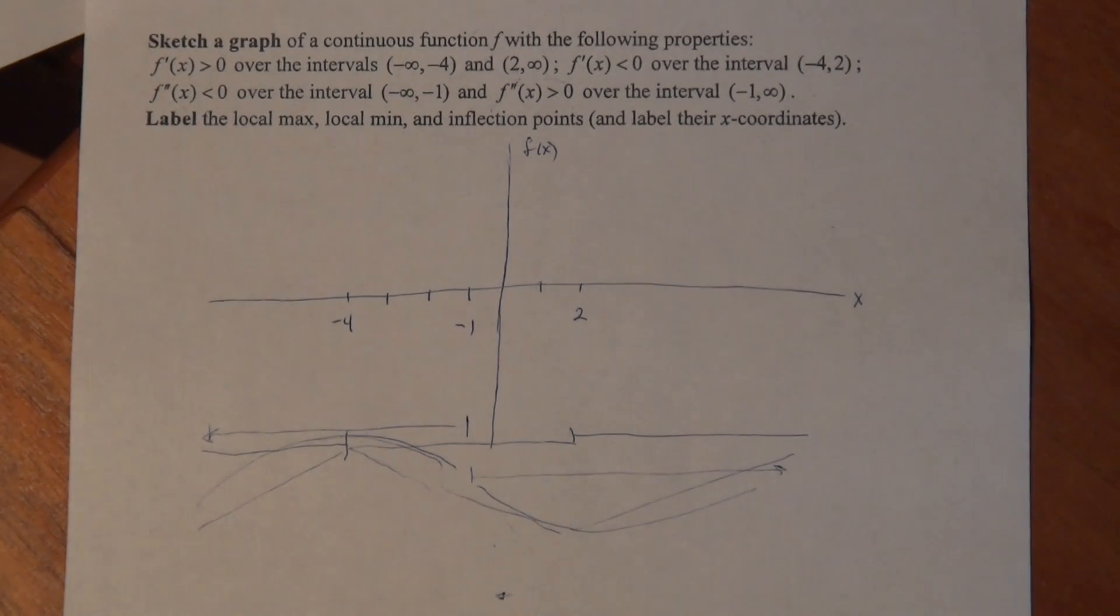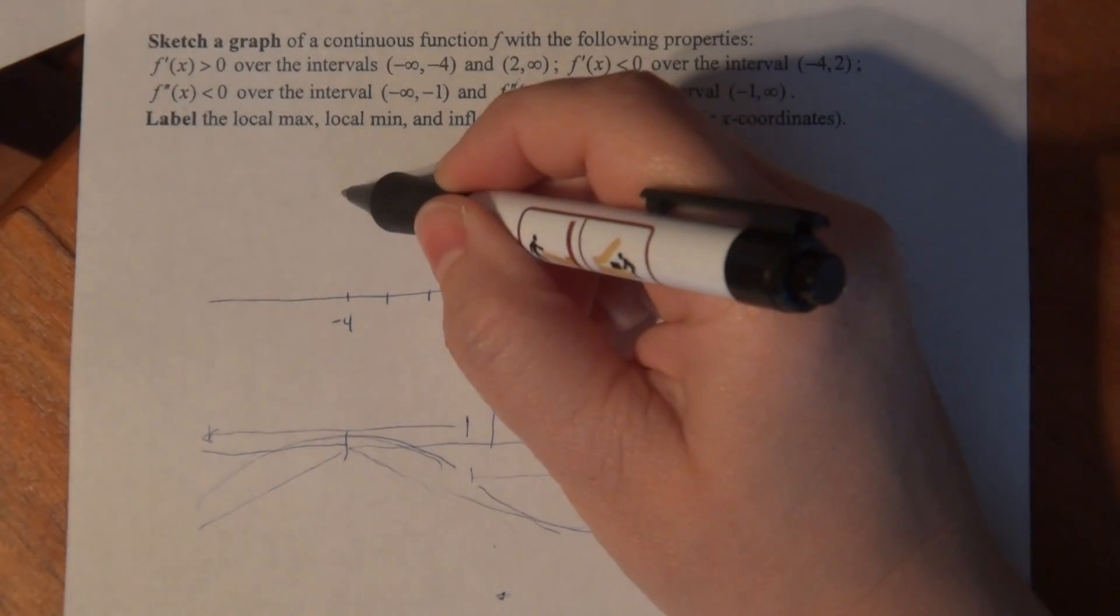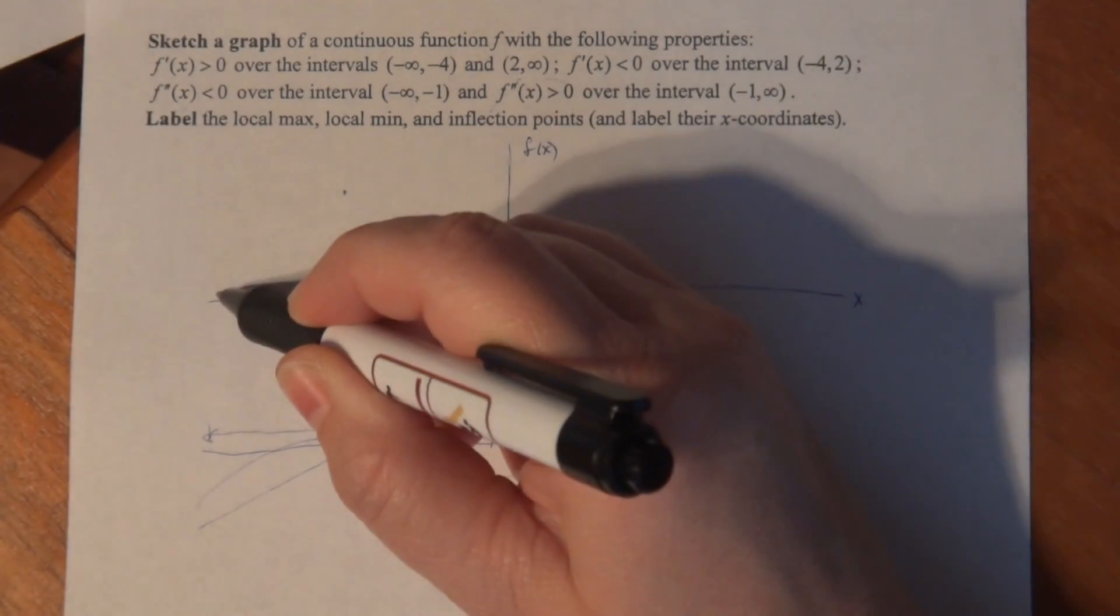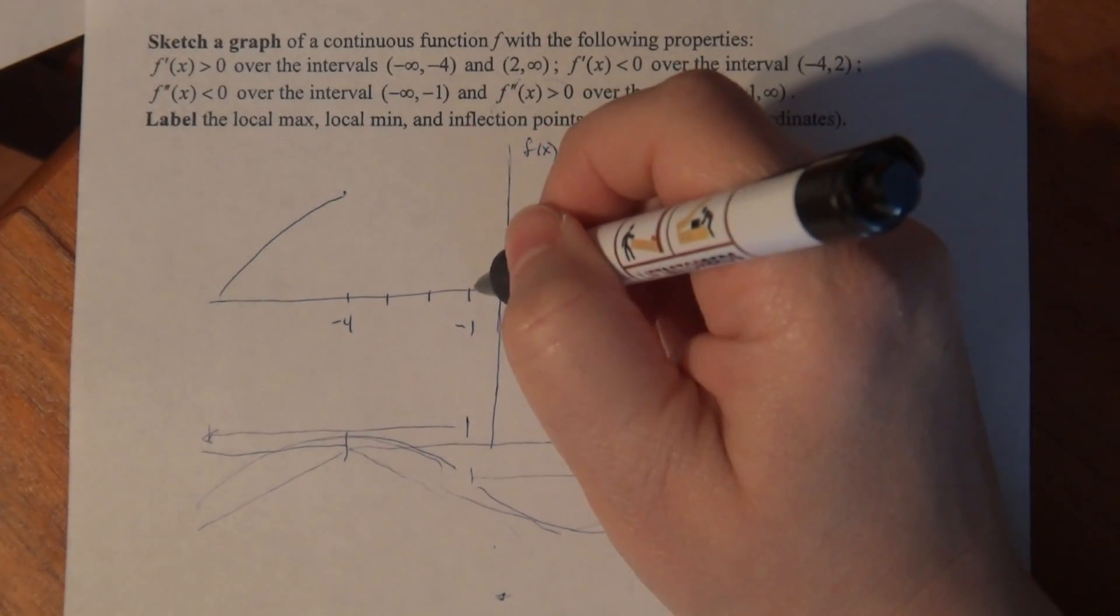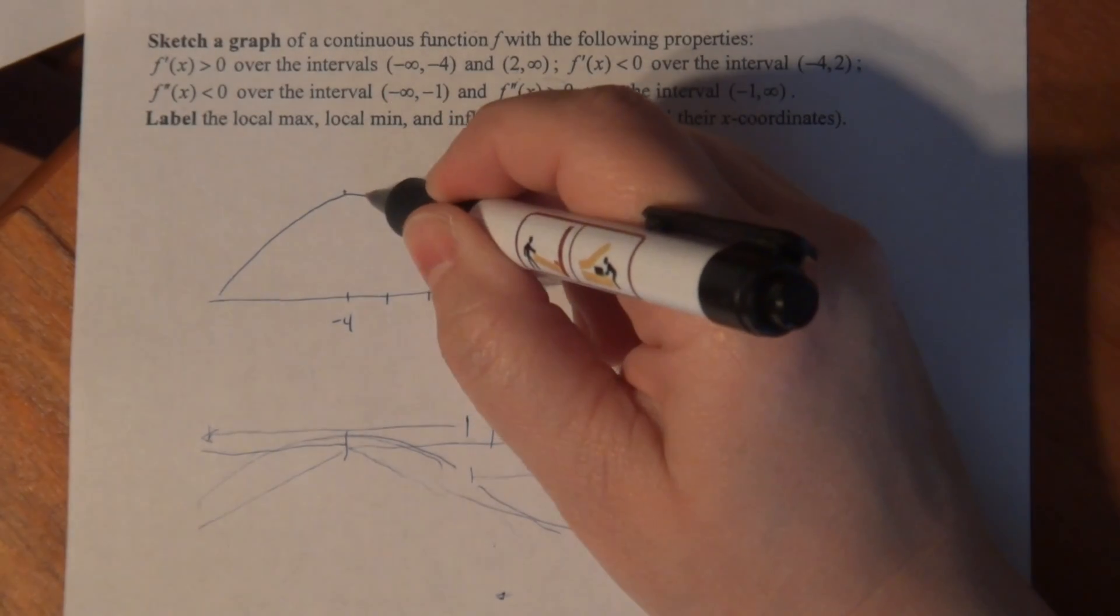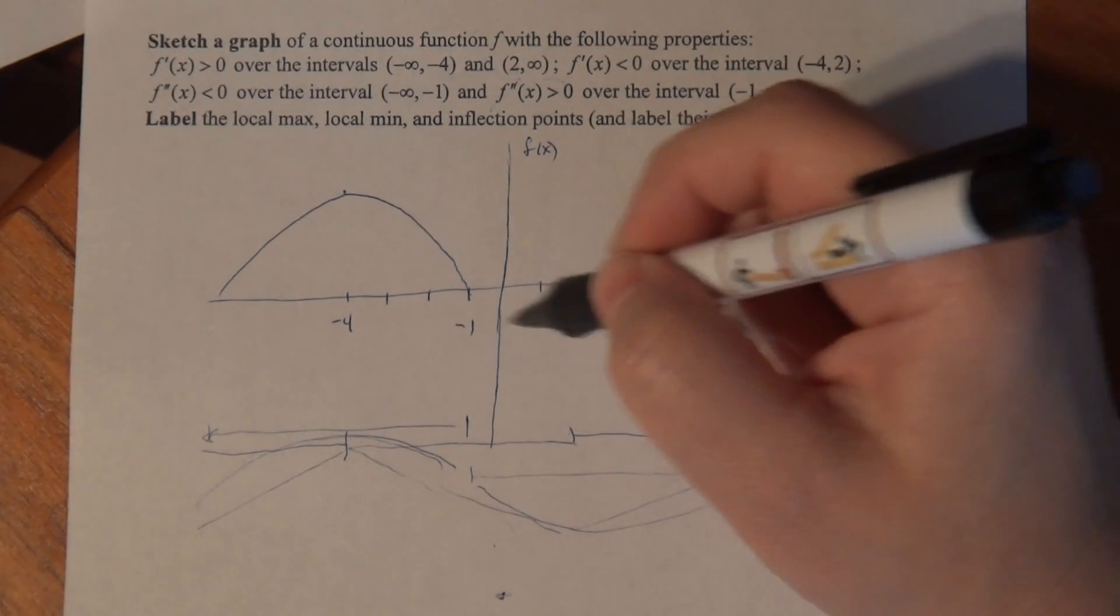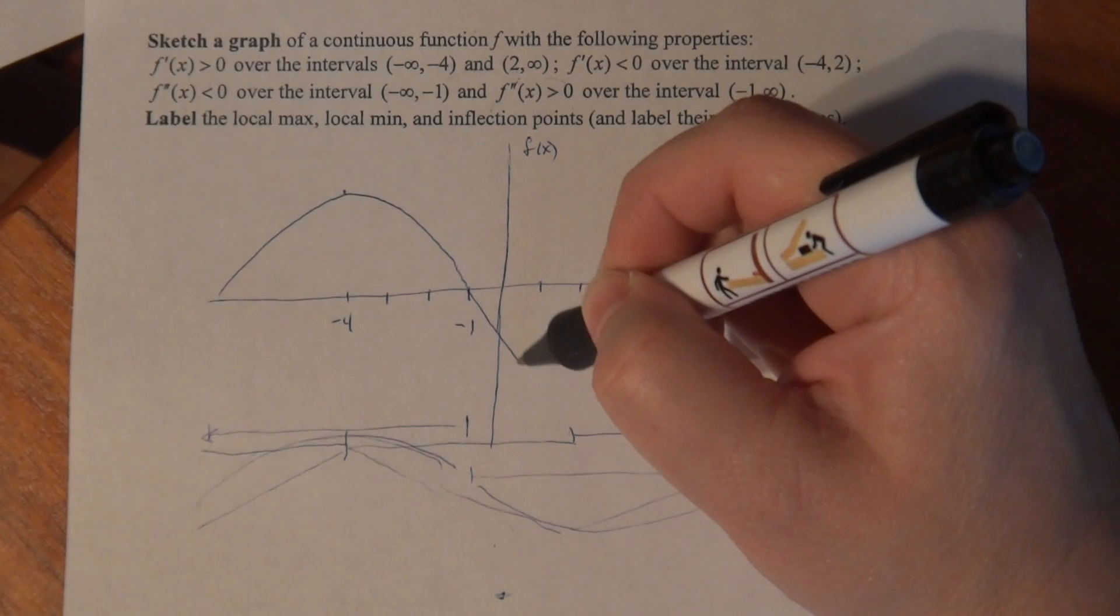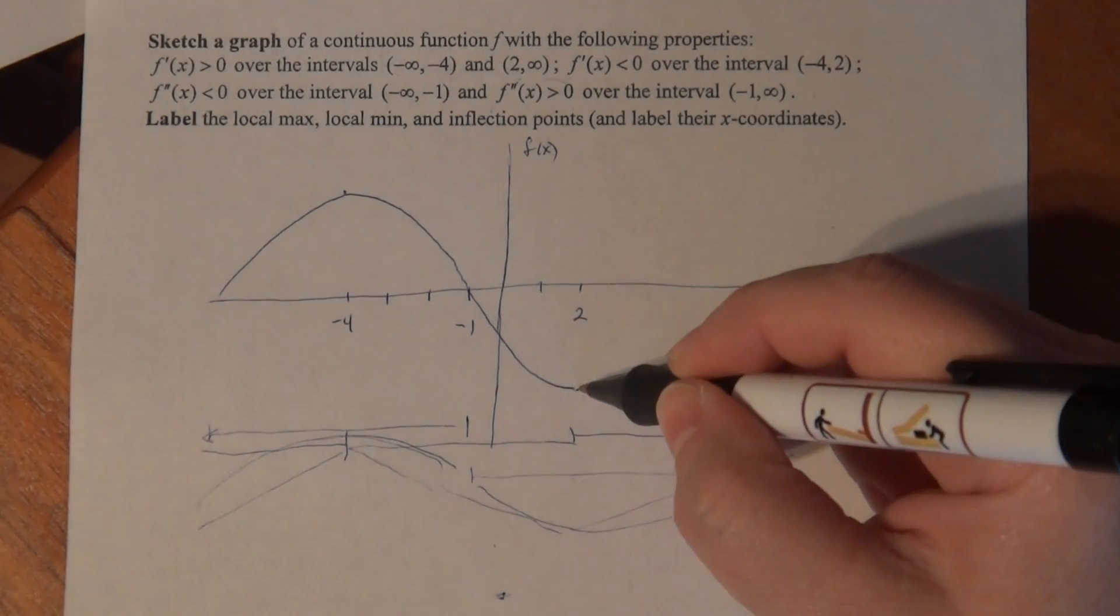And we don't have to worry about where we put it vertically, because we don't have any other information to tell us where to put it. So it's going to have the same characteristics no matter where we put it vertically. So I know up until negative 4, I have to be increasing and concave down. After negative 4 to negative 1, I'm decreasing and concave down. From negative 1 to 2, I'm decreasing and concave up. And from 2 to infinity, I'm increasing and concave up.